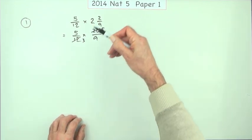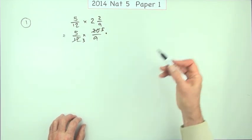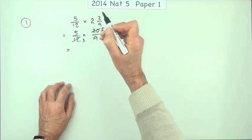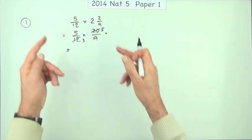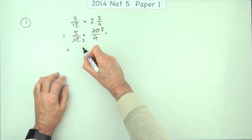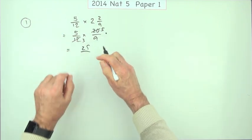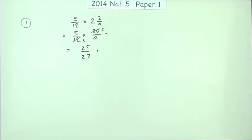So cancel first, keeps everything small. Now multiply: 5 times 5 is 25, 3 times 9 is 27, and there you go.